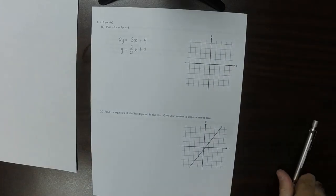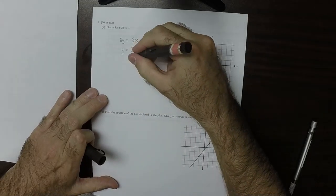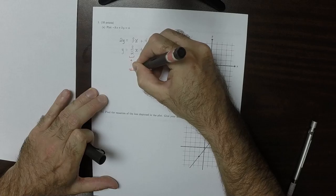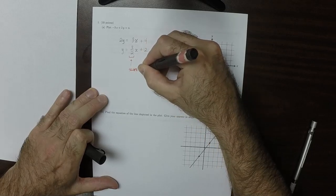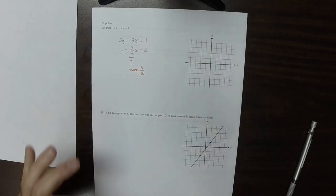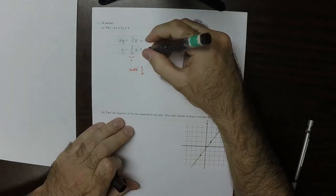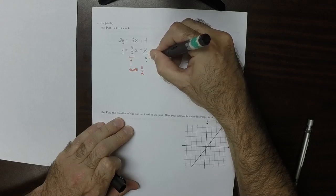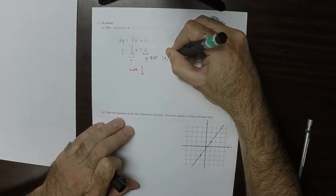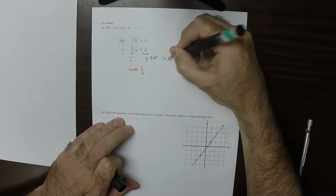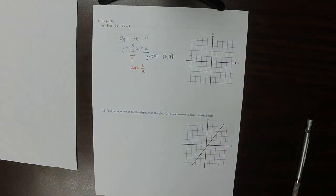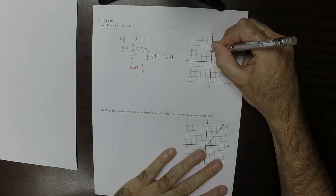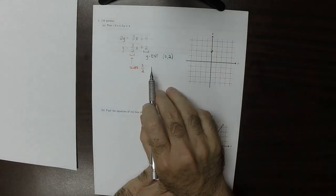And that tells us that the slope is 3 halves, and this tells us that the y-intercept is 0, 2. So then plotting that point, this is 0, 2, and then 3 halves.